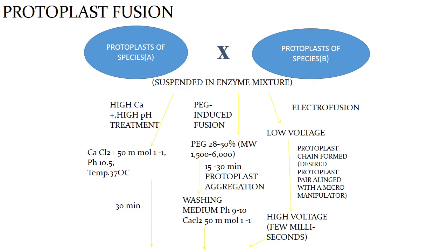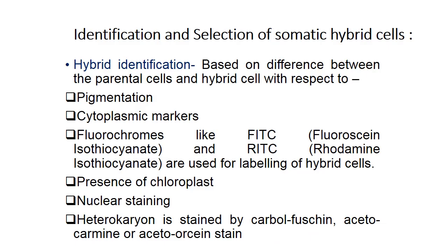Identification and selection of somatic hybrids is based on differences between parental cells and hybrid cells with respect to pigmentation and cytoplasmic markers. Fluorochromes like fluorescein isothiocyanate or rhodamine isothiocyanate are used for labeling hybrid cells. Presence of chloroplasts, nuclear staining, and heterokaryon staining by acetocarmine or acetoorcein stain are also used. Regeneration of hybrid plants is the fourth step, where hybrid plants are induced to regenerate from hybrid callus.